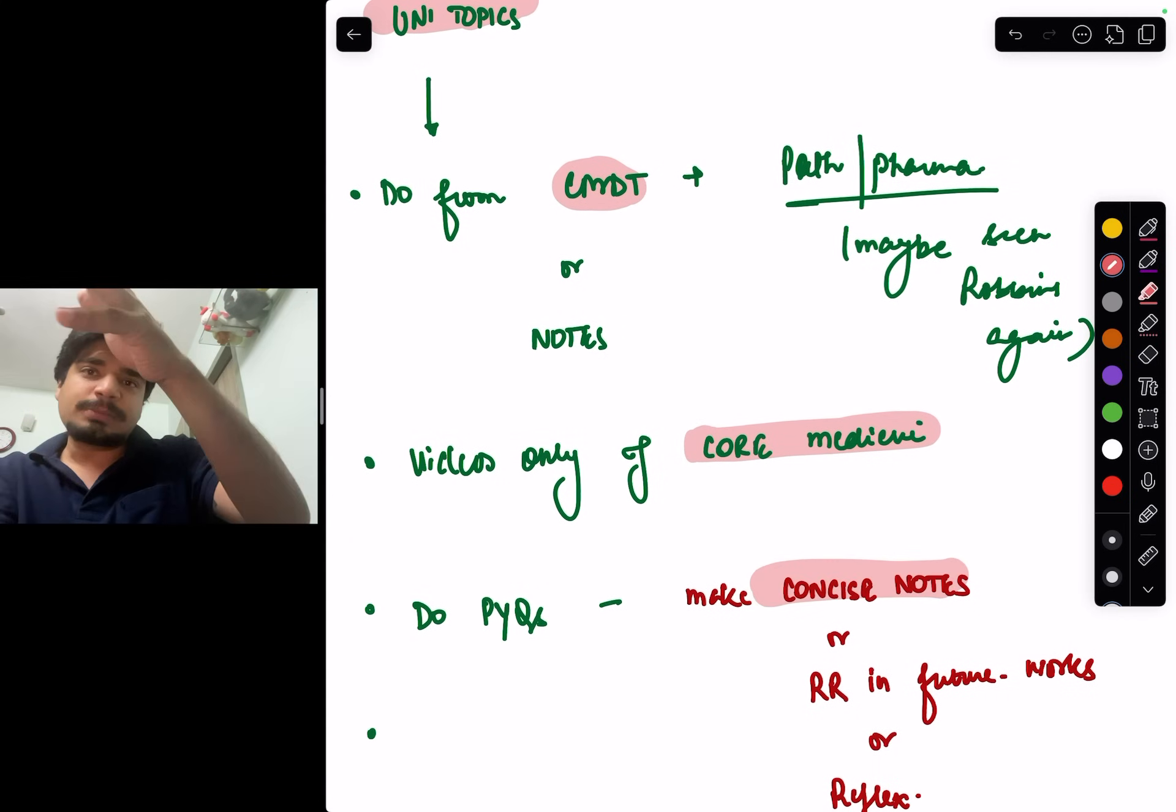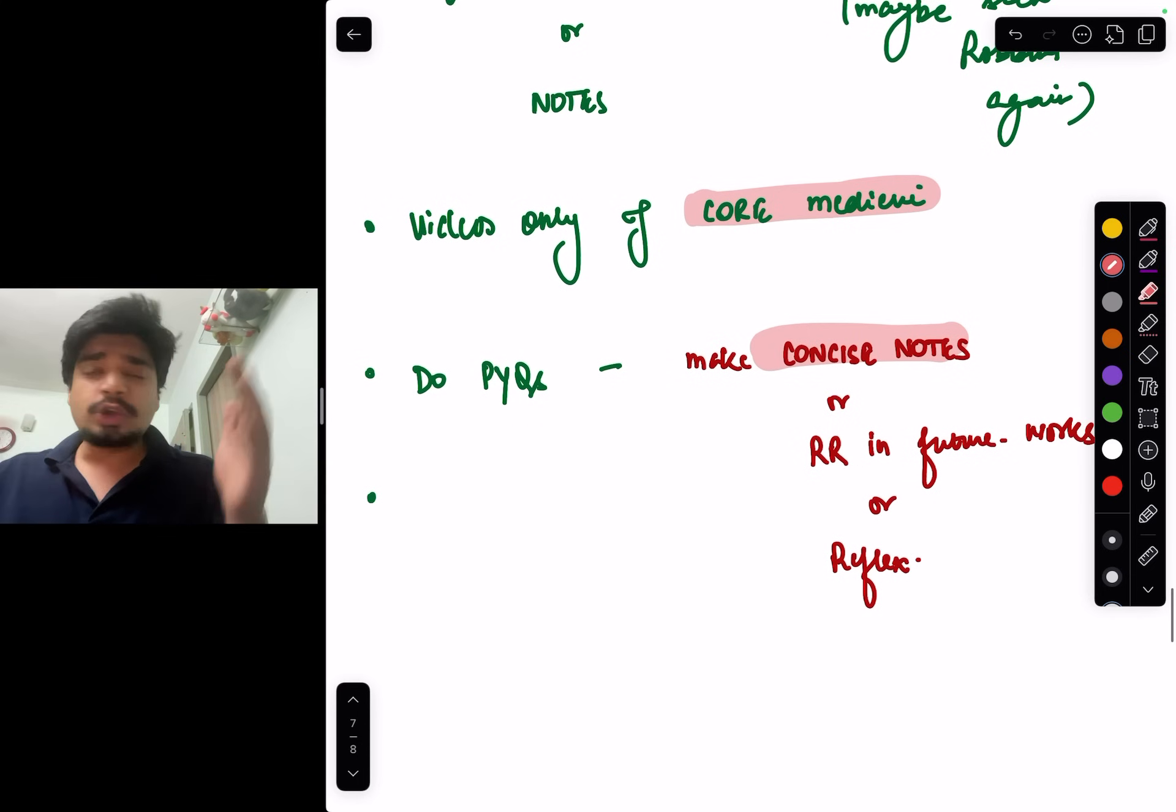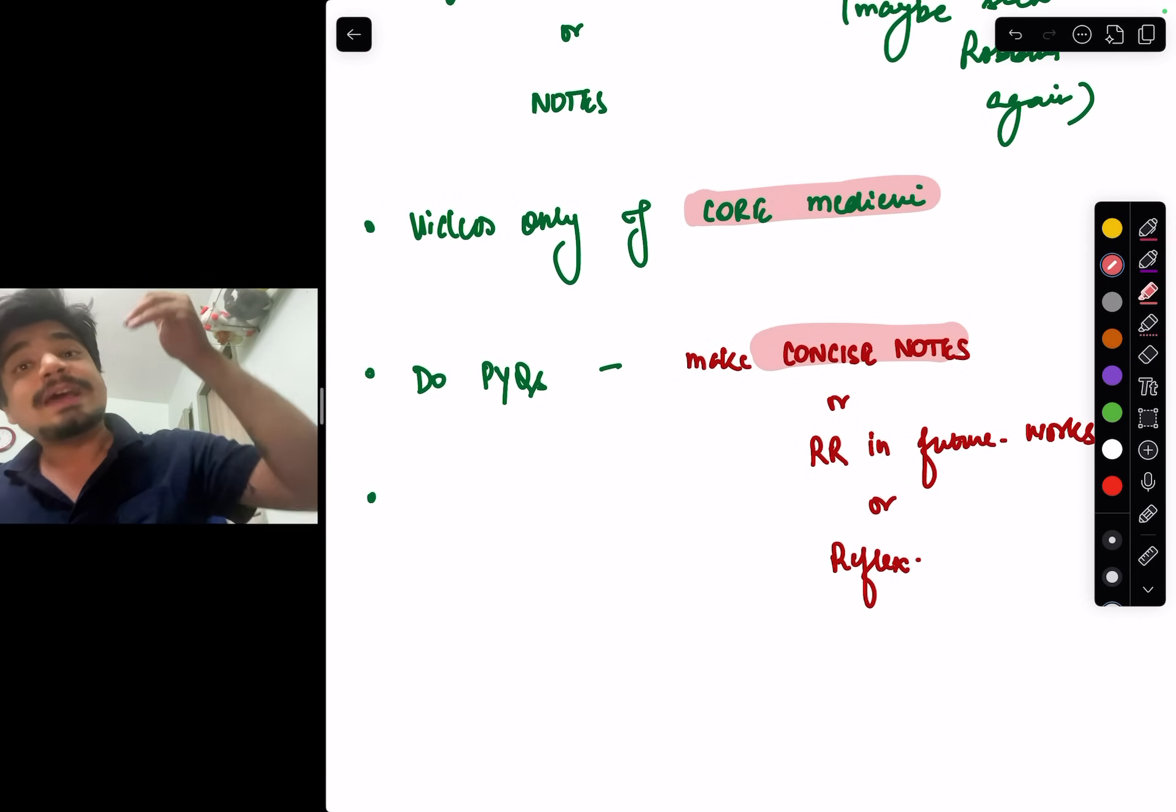And like I said, from the university topics and previous questions, make concise notes. You can find these concise notes in Reflex. Reflex has all medicine concise notes. You want to buy them independently, you can buy them independently. Or if you don't want to do anything, that's perfectly fine. You can use rapid revision notes which are there in Marrow. That is also another option.